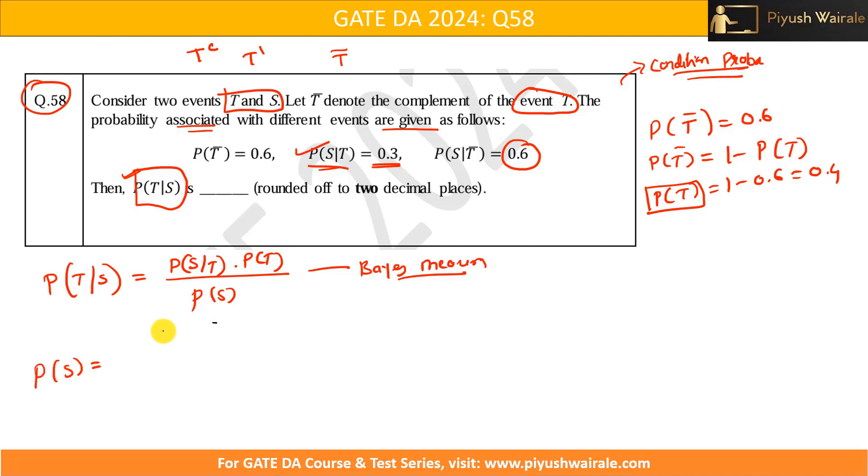Now, how I can find out probability of S by using these two things? So, simple probability of S is probability of S given T into probability of T plus probability of S given T complement into probability of T complement, right? Can I write like this by using law of probability? Yes.